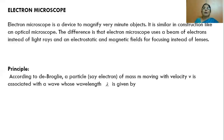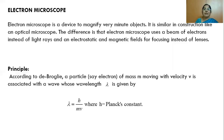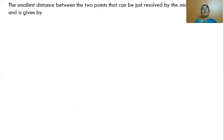We know a particle of mass m moving with velocity v will always be associated with matter waves called de Broglie waves, whose wavelength lambda is given by lambda equal to h by mv, where h is Planck's constant, m is the mass of the electron, and v is the velocity with which the electron is moving. The smallest distance between two points that can just be resolved by a microscope is given by delta x approximately equal to lambda by 2 sin theta.